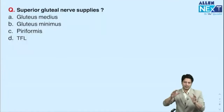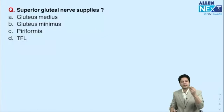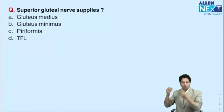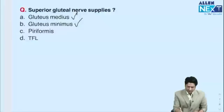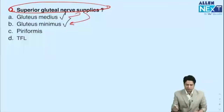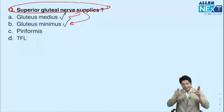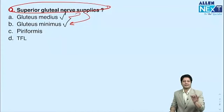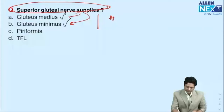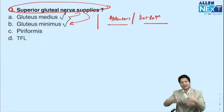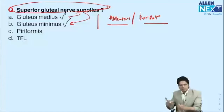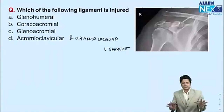The question asks: what is the nerve and which muscles does it supply in the Trendelenburg test? The answer is the superior gluteal nerve, supplying gluteus medius and gluteus minimus. The inferior gluteal nerve supplies gluteus maximus. Gluteus medius and minimus are abductors and external rotators of the hip joint. These abductors are assessed by the Trendelenburg sign.